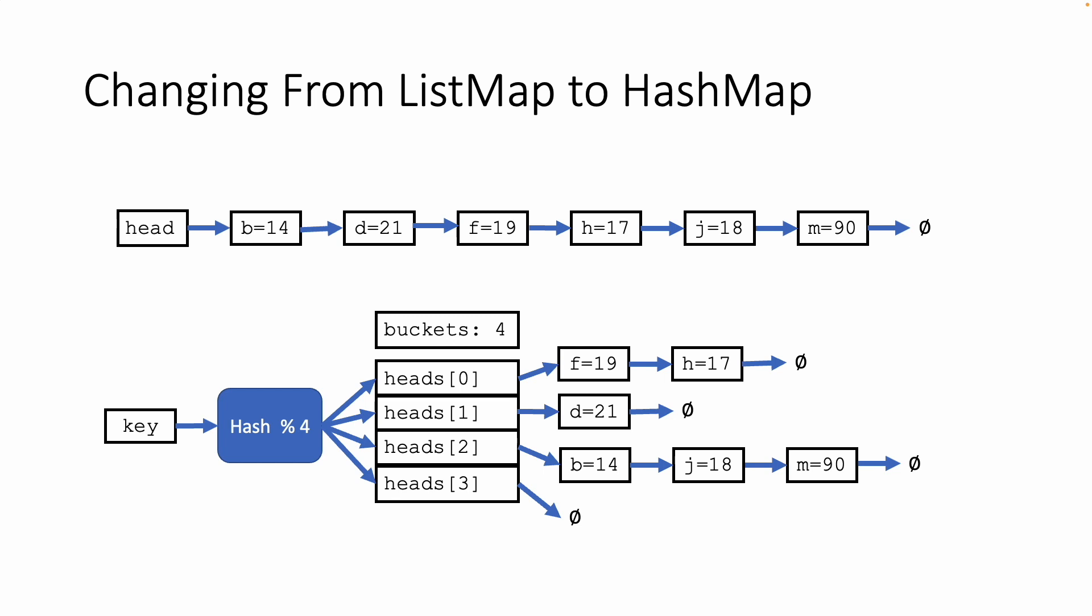So wherever we put 'd', it's going to be in bucket one, and we can look it up in bucket one, we can store it in bucket one, etc. For inserting m equals 90, that's going to hash into bucket two, and we're going to put it in that linked list.